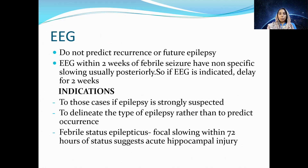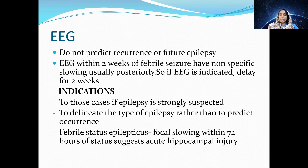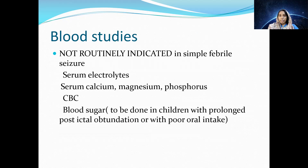Regarding EEG: it does not predict recurrence of febrile seizures or epilepsy. If EEG is indicated, delay it for two weeks after the febrile seizure, as non-specific slowing may be seen acutely. Indications for EEG include cases where epilepsy is strongly suspected or to delineate the type of epilepsy. In febrile status epilepticus, EEG within 72 hours shows focal slowing, reflecting acute hippocampal injury.